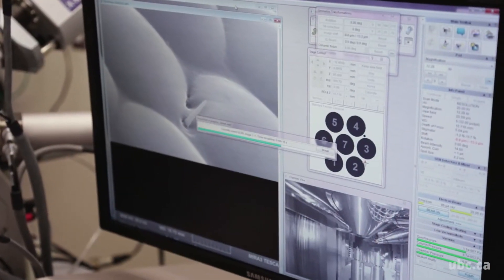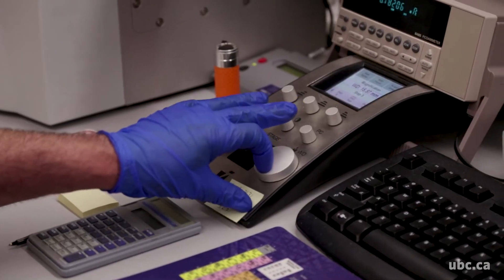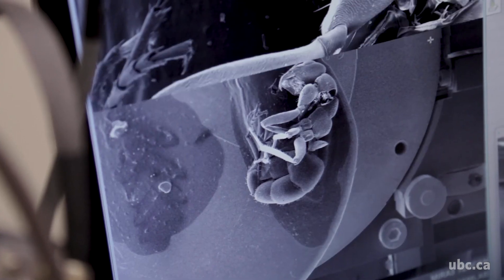The scanning electron microscope can be used for biological or medical research. It can be used for engineering, like metallurgy, and it can be used for geological applications. And we have two of them in our laboratory.